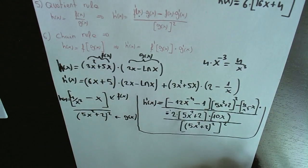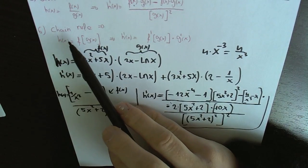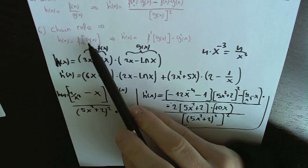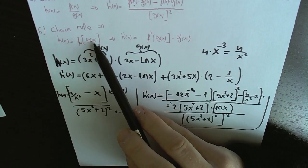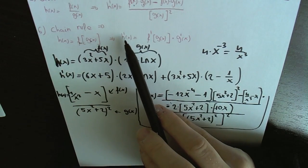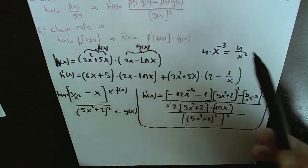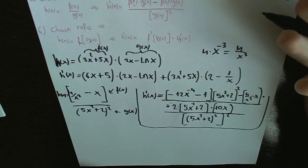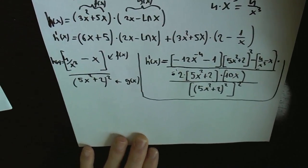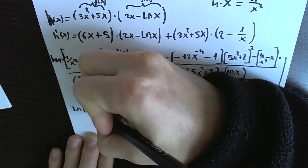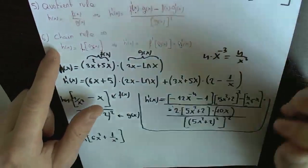The last property is the chain rule. The chain rule applies when we have a function f that depends on another function g, and g depends on the variable x. To find the derivative, we take the derivative of f with respect to g and multiply by the derivative of g — this is what we have been doing all along by multiplying by the inner function. For example, consider h(x) equal to logarithm of 6x squared plus 1 divided by x squared.